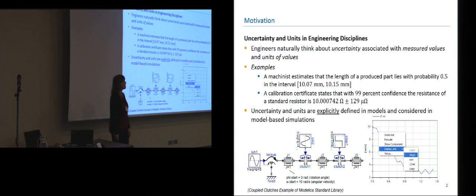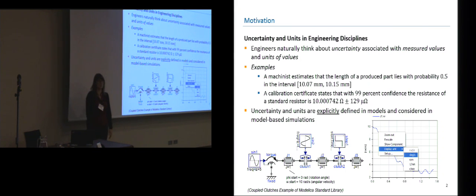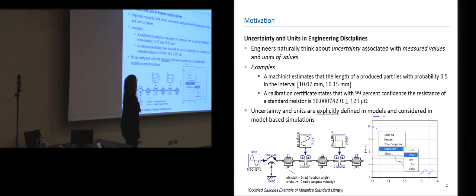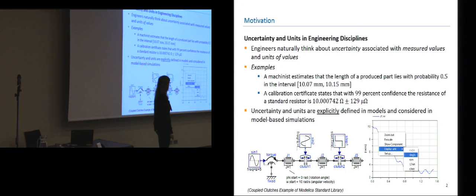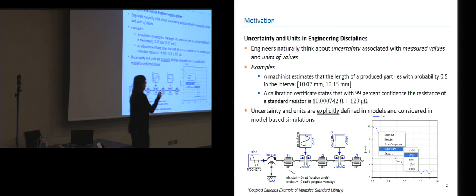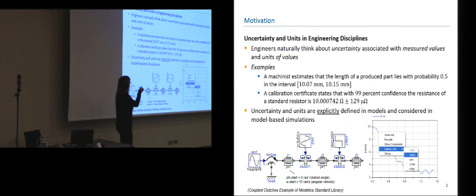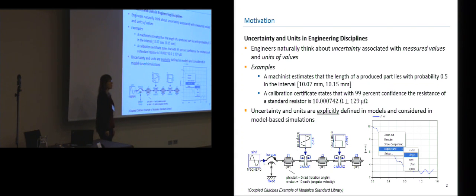Let's start out with a little bit of motivation for this work. If we think of other engineering disciplines, such as mechanical engineering, chemical engineering, or electrical engineering, it's very natural for engineers in these domains to think about uncertainty of data that they measure and the units of measured values. For instance, a machinist would estimate the length of a certain produced part to be lying with a certain probability within a certain range.